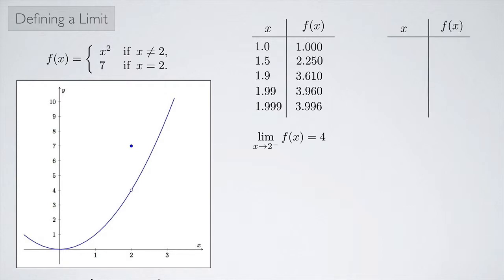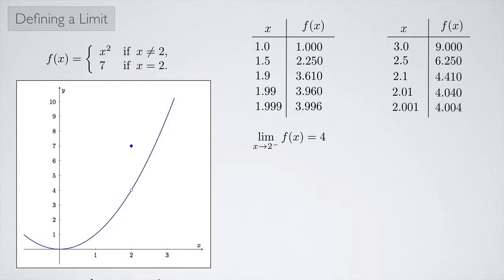We can do a similar thing from the right. We look at x equals 3 — 3 squared is 9 — and 2.5 squared is 6.25. If we keep going, getting closer and closer to 2 from the right, we again see that f(x) approaches 4. So the limit as x approaches 2 from the right of f(x) is 4. Since both one-sided limits exist and are equal, the limit as x approaches 2 of f(x) is 4.